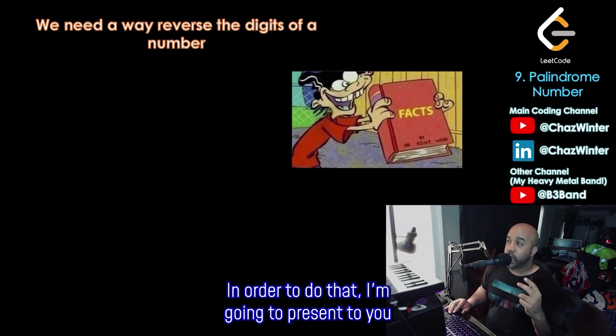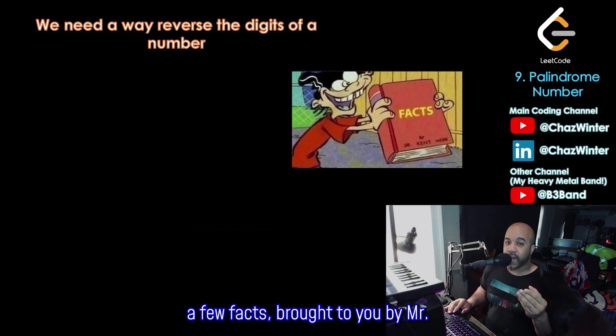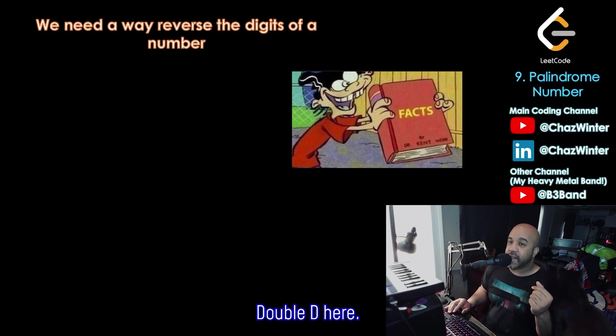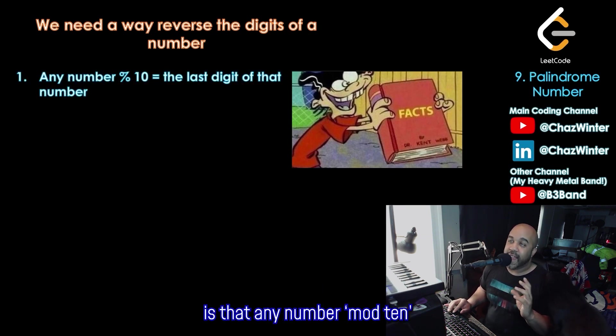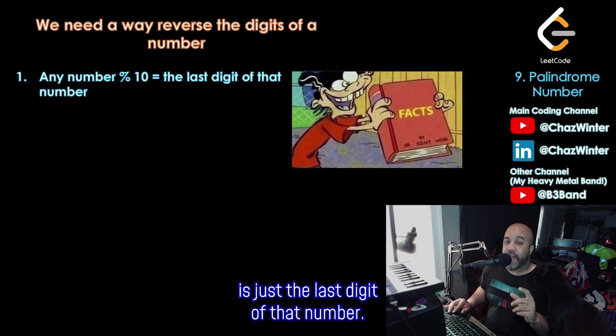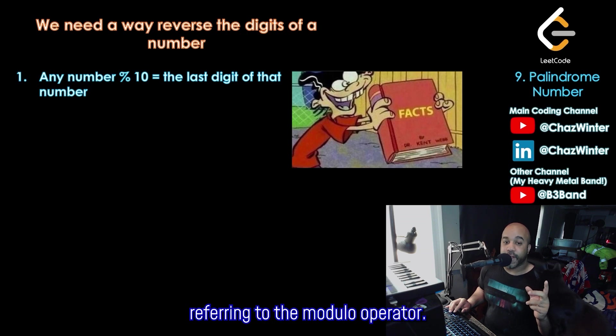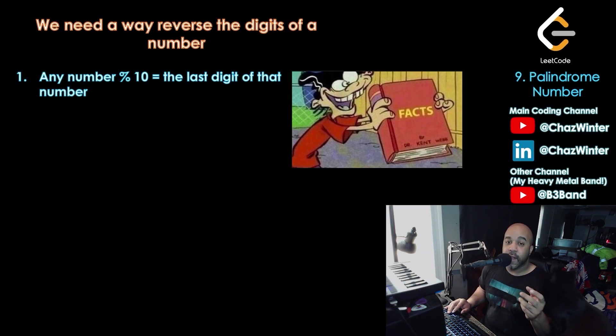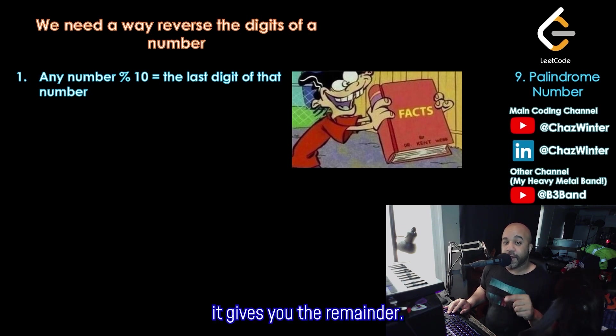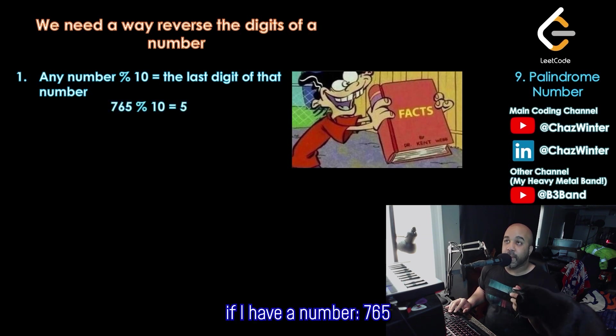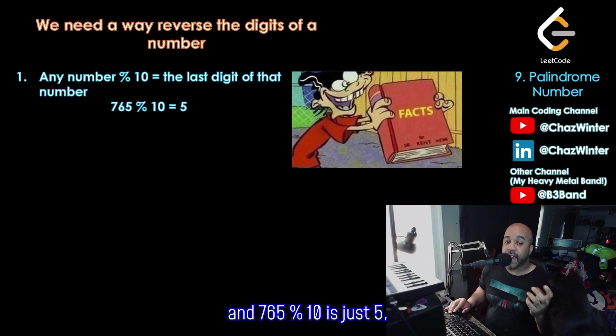In order to do that, I'm going to present to you a few facts brought to you by Mr. Double D here. So the first fact that I'm going to present is that any number mod 10 is just the last digit of that number. And when I say mod 10, I'm referring to the modulo operator. Modulo operator is division, except that instead of giving you the quotient, it gives you the remainder. So as an example, if I have a number 765 and I just want the last digit of that number, I can just mod 10,